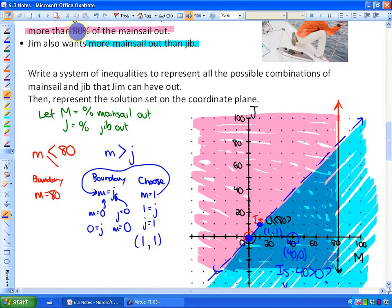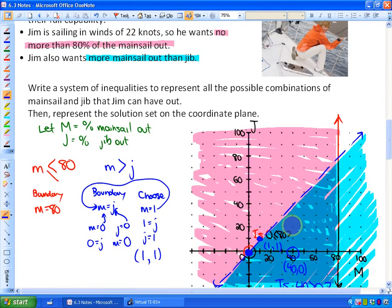So you could have, this represents where there is no more than 80% of the mainsail out, as well as there is more mainsail out than jib. And you can take any particular point and see if that is true. So let's look at this point, for example. You take any point in the solution region. So this is 60 mainsail and 30 jib. We are suggesting that is a solution. Does that coordinate or combination, 60 mainsail and 30 jib, meet the criteria? Is that no more than 80% of the mainsail? Yes. Does that also meet the criteria that there is more mainsail out than jib? Yes. So we can assume that we have done this correctly, and you can take any point in this solution region here and it would meet the criteria.